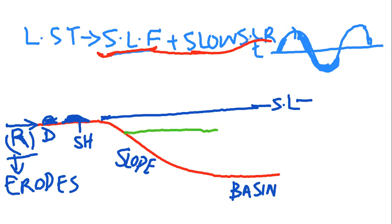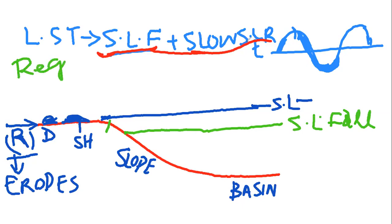When sea level fall occurs and you observe that it has fallen below the shelf break, a sea level fall occurs. With regression — with sea level fall — what happens? The position of sediment deposition shifts towards the basin.